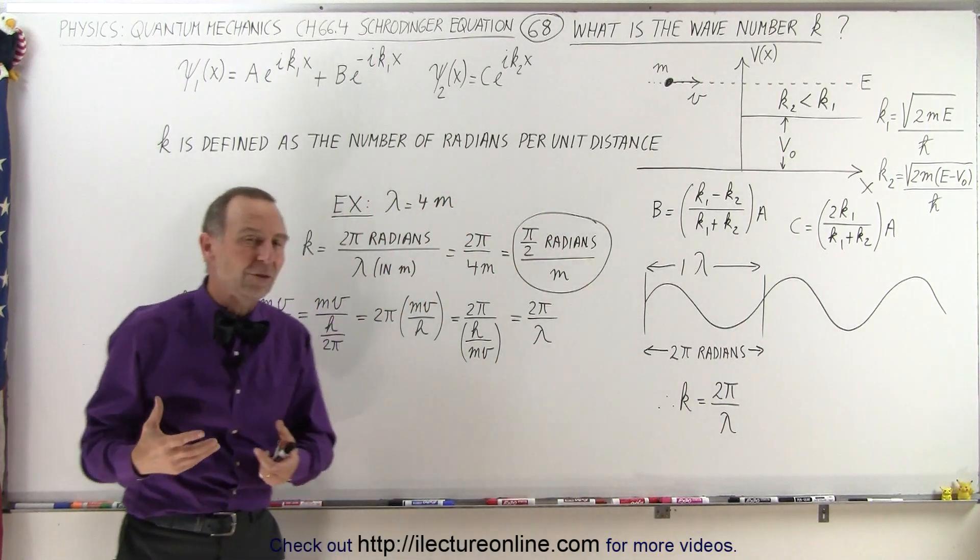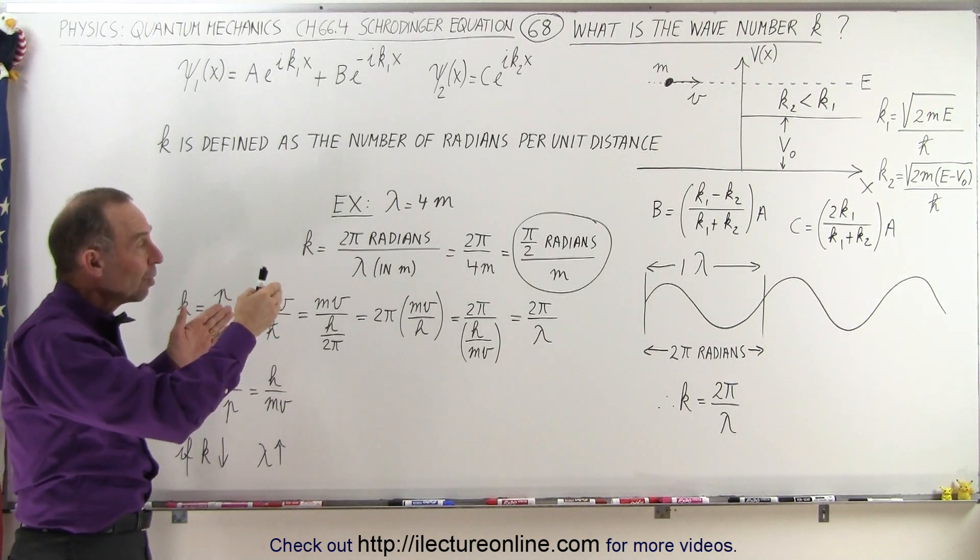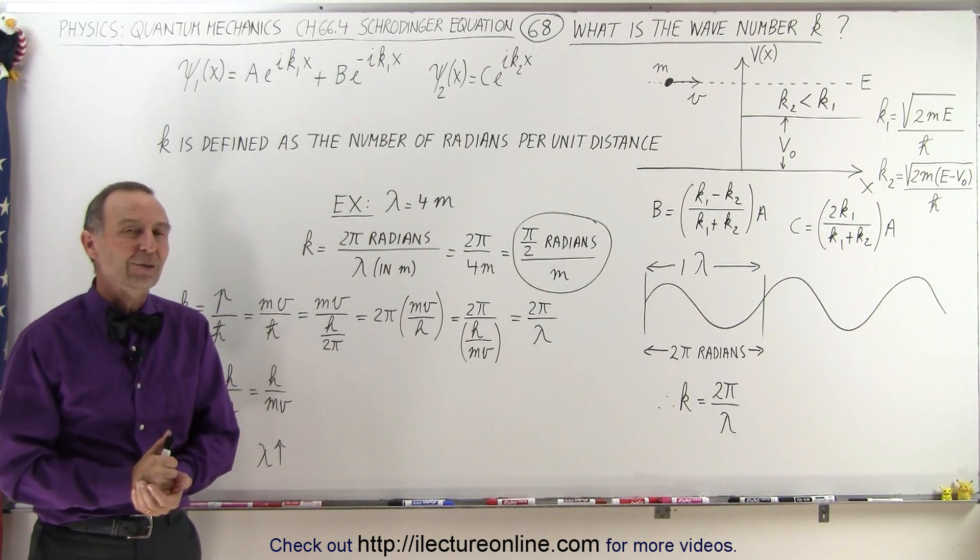So that's what we know now as the representation of the wave number. It simply is related to the number of radians per meter for the wave. And that's how we define the wave number.